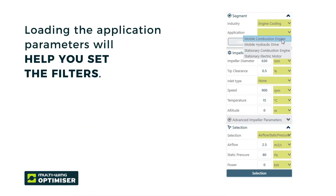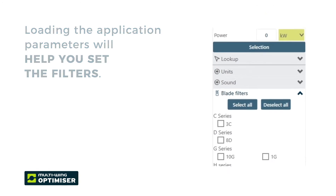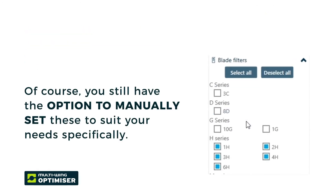Loading the application parameters will help you set the filters for blades, hubs, and materials, and set the most common environment parameters. Of course, you still have the option to manually set these to suit your needs specifically.